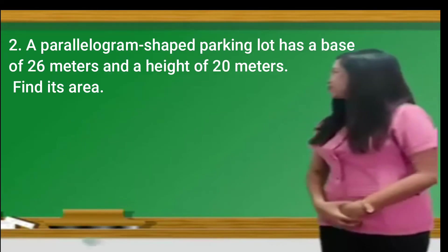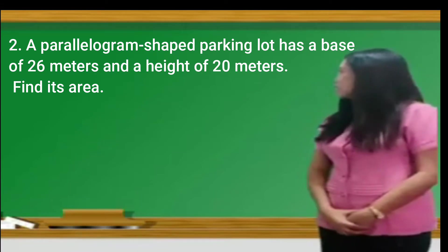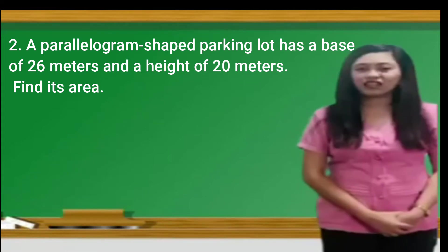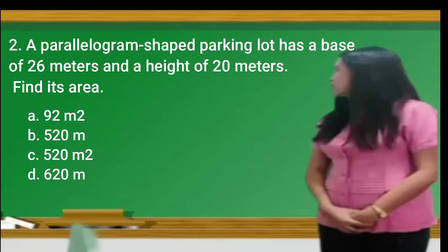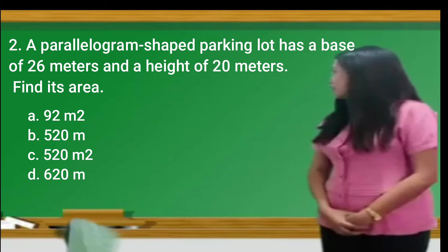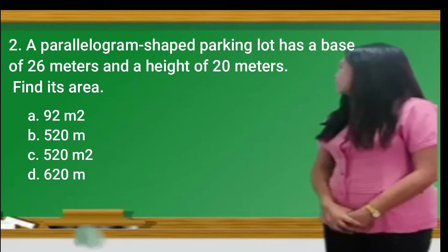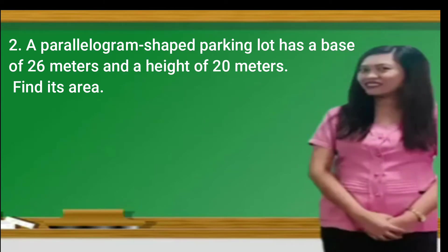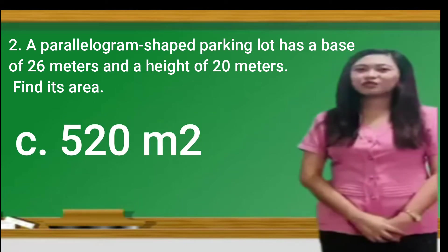Number 2: A parallelogram-shaped parking lot has a base of 26 meters and a height of 20 meters. Find its area. A. 92 square meters. B. 520 meters. C. 520 square meters. Or D. 620 meters. The answer is C, 520 square meters.